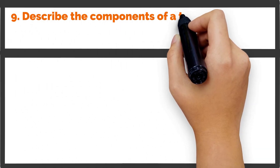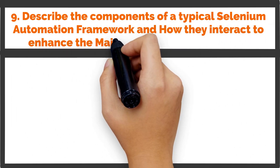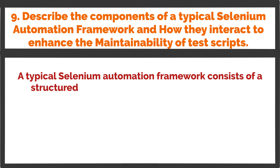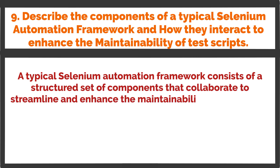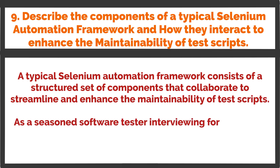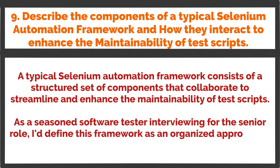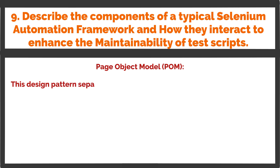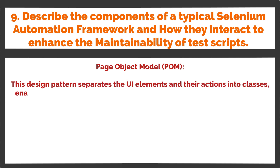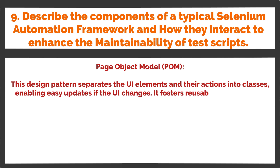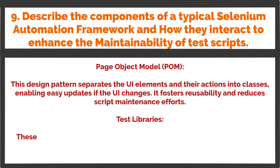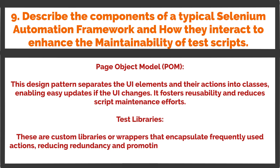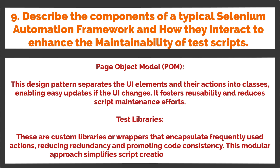Question 9: Describe the components of a typical Selenium automation framework and how they interact to enhance the maintainability of test scripts. A typical Selenium automation framework consists of a structured set of components that collaborate to streamline and enhance the maintainability of test scripts. Page Object Model: This design pattern separates the UI elements and their actions into classes, enabling easy updates if the UI changes. It fosters reusability and reduces script maintenance efforts. Test libraries: These are custom libraries or wrappers that encapsulate frequently used actions, reducing redundancy and promoting code consistency.